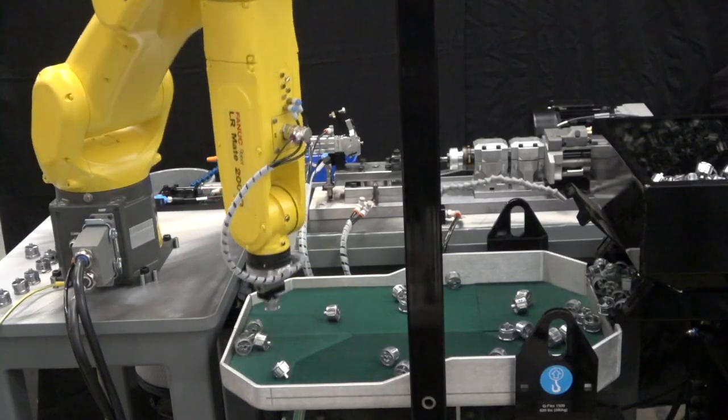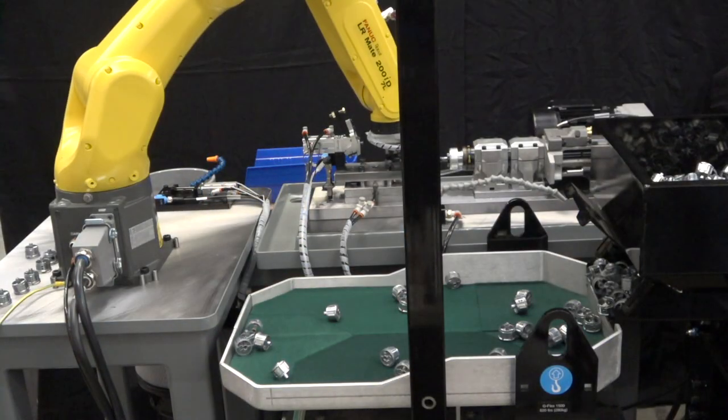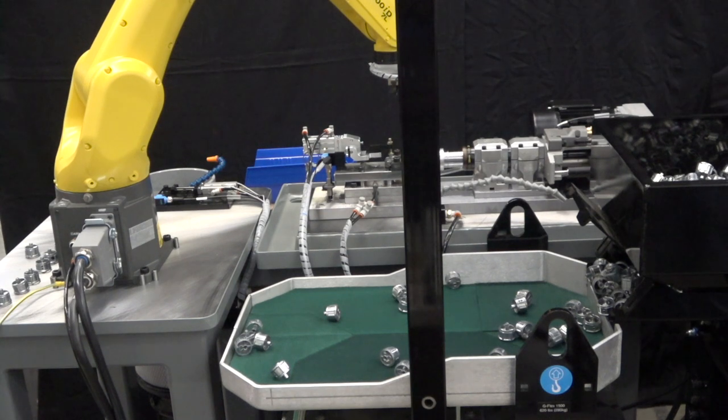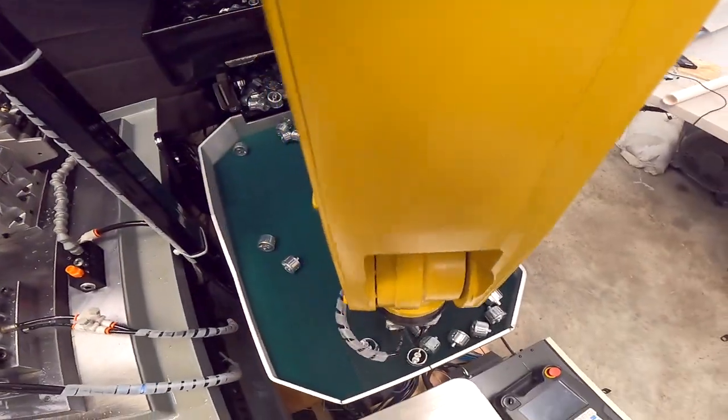For this application, we are using a GRACO parts feeder to present parts to the integrated FANUC robot vision system. The GRACO allows the operator to load 1,500 parts in the hopper for production.